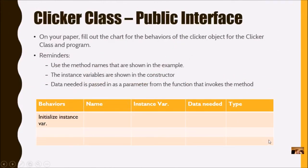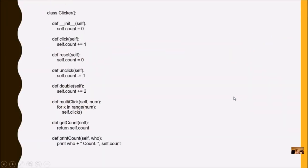Let's try another example. This is going back to your clicker class. On your paper, as a group, once again, fill out the chart for the behaviors of the clicker class. And remember to use your method names. The instance variables are in the constructor, and data needed is in a parameter. So look for a parameter in your method, and that's how you'll know the data is needed. Also fill out the type. Is it a constructor, a mutator, or an accessor? Here's the code, and you can actually do more than this. If your clicker class included more methods than this, you can add to your chart. So stop the video, fill out your chart, and then turn back on the video for more instructions.